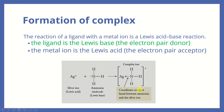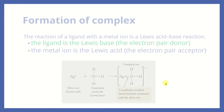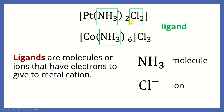Looking at ligands in more detail: by definition, ligands are molecules or ions that have electrons to give to the metal cation. Ligands are Lewis bases — they give electron pairs. So anything that can be a ligand must be able to give electron pairs away. Molecules like ammonia, which has lone pair electrons, can be ligands. Anions with extra electrons that can form two-electron bonds can also be ligands.